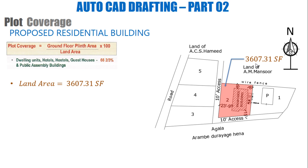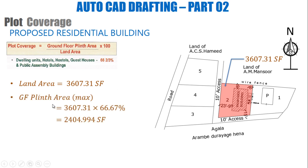Now, within this land, what is the maximum plinth area I can cover? That is 66.67% of the land area. So the maximum ground floor plinth area equals 66.67% × 3,607.31, which gives 2,404.994 square feet. That is the maximum plinth area allowed.